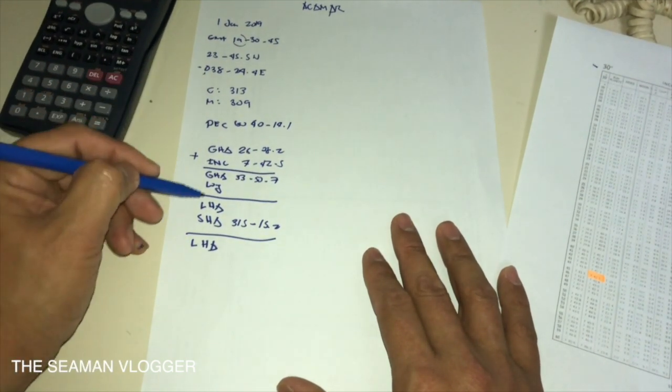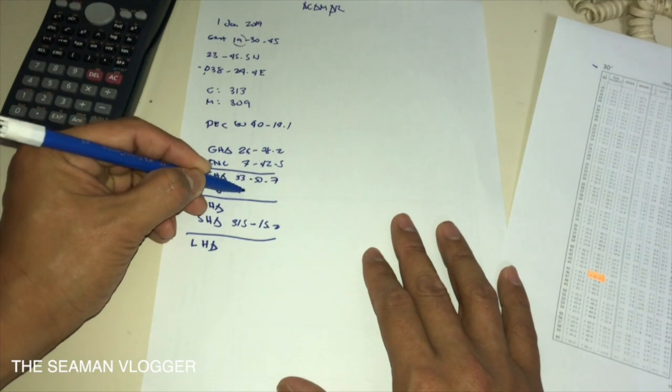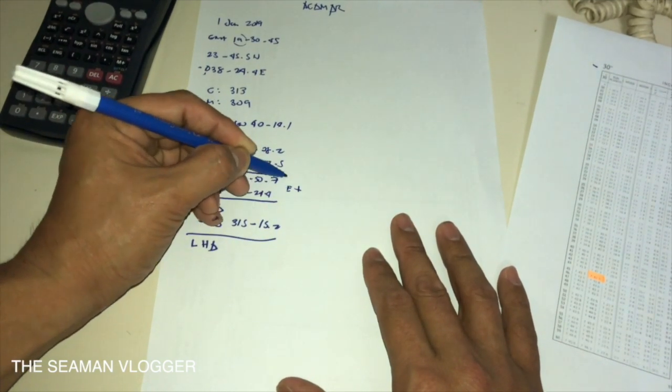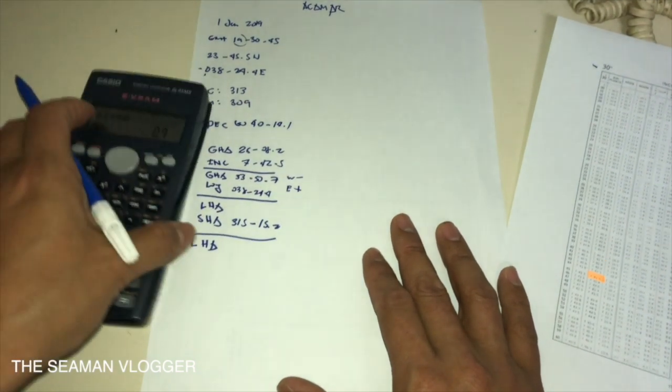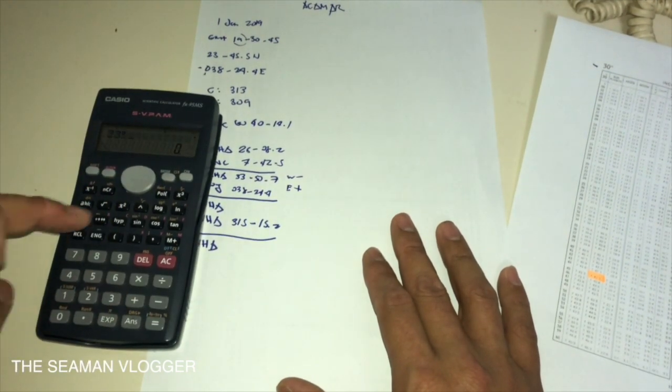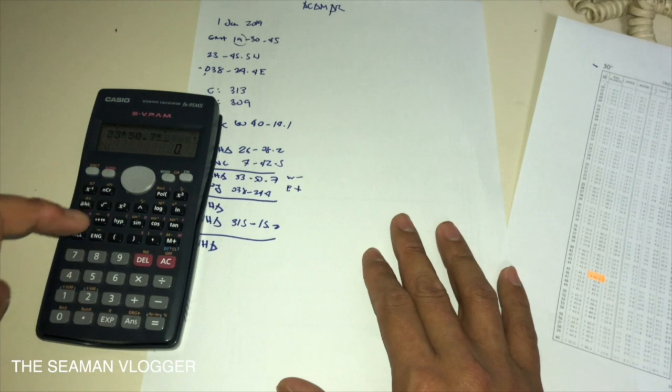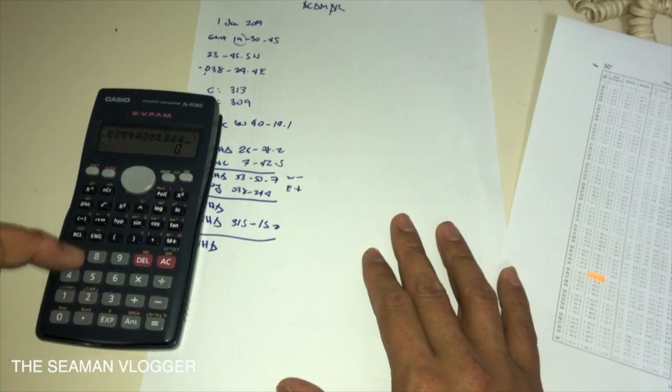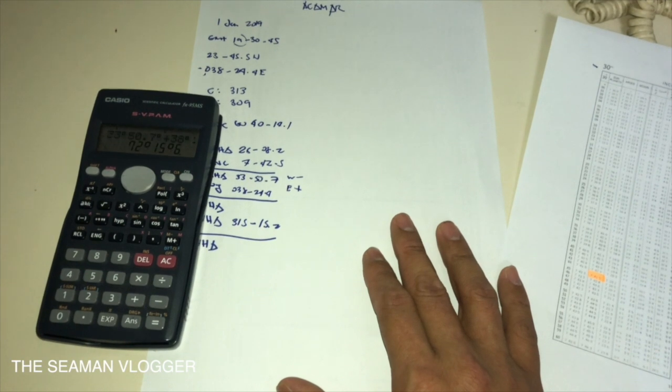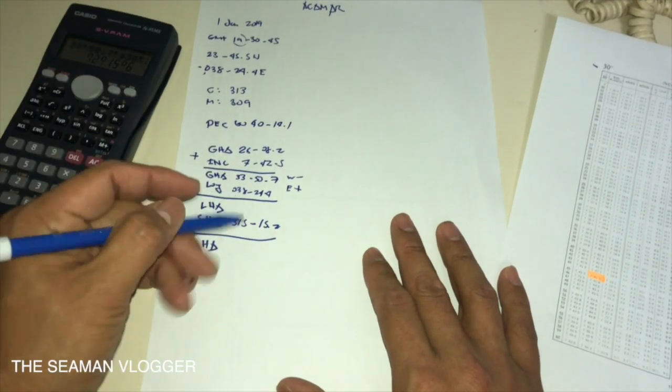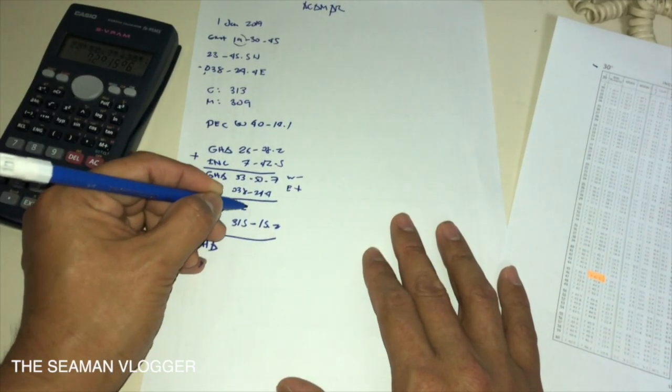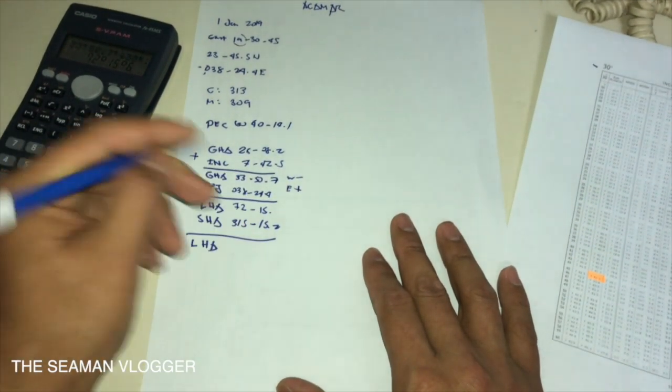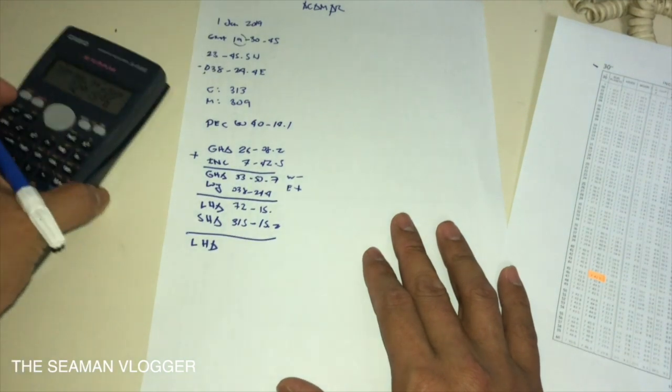Longitude, bring down here: 038 degrees 24.4 minutes East. If East plus, West minus. So 33 degrees 50.7 minutes plus 38 degrees 24.4 minutes equals 72 degrees 15 minutes 6 seconds. And 6 divided by 60 is 0.1.